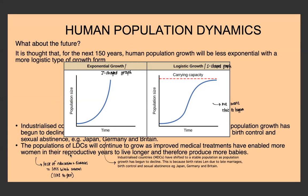In developing countries that rely on agriculture and farming, people often have many children so the children can help on the farm. If you only have one child, you only have one free farm worker who will grow up and take over. So people preferably want more children, which has also led to more rapid population growth.